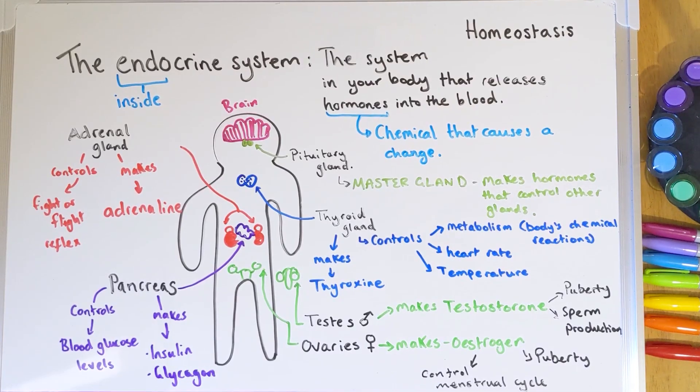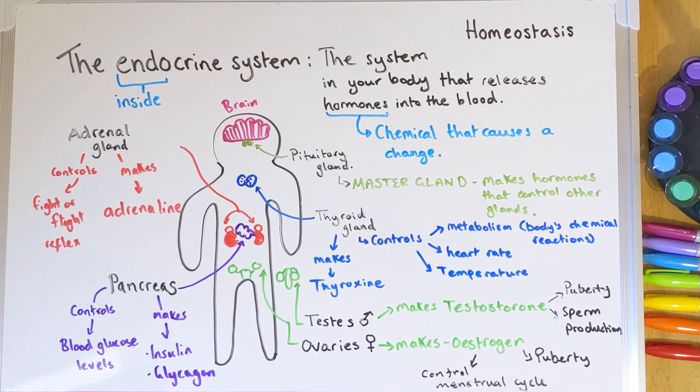So that's all of the glands in the endocrine system, what they make, and what they control. I'd challenge you to turn your piece of paper over and try to get as much from memory as you can — do that a few times over the next week or so to really embed them in your brain. The last thing we're going to look at is how hormones get around your body, so grab another bit of paper and follow along with me again.